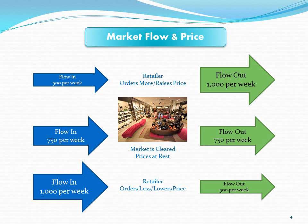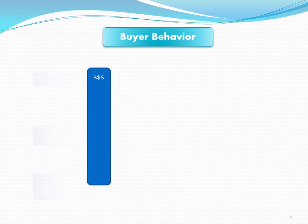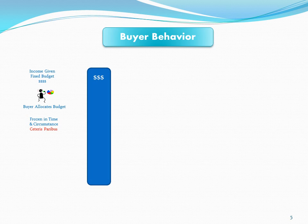Let's look at the flows out per week and how buyers behave. I'd like to look at your behavior and have you think about how you behave. I'm going to represent a person here with a fixed budget — we all have a fixed budget. When you freeze time, everyone has a fixed budget and only a certain amount of income. What we do then is simulate how prices would affect our buying behavior.